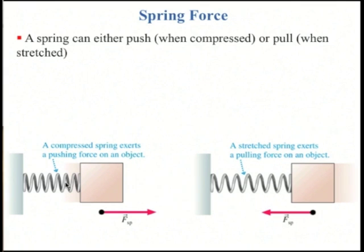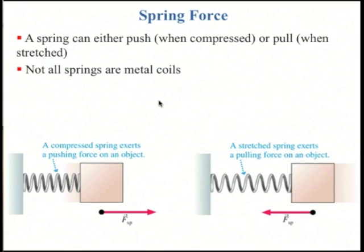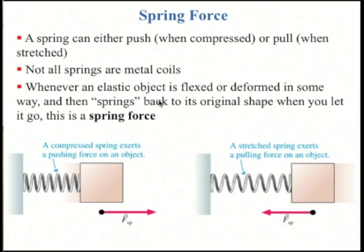A spring can either push if it's compressed — this spring on the left is a little shorter than it wants to be, so it's pushing the box to the right — or it can pull. Here's a spring which is a little longer than it wants to be, so it's pulling the box to the left. Not all springs are actually metal coils. Whenever any elastic object is flexed or deformed, it springs back to its original shape when you let it go, and this is called a spring force.